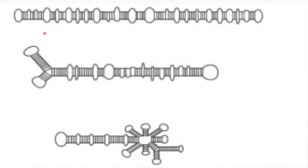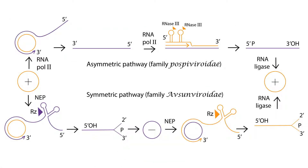Three types of viroid structures have been proposed. First is the rod-like secondary structure, proposed for Potato Spindle Tuber Viroid, the type member of the family Pospiviroidae. Next is the quasi rod-like secondary structure, proposed for Avocado Sunblotch Viroid, the type member of the family Avsunviroidae. Next is the complex branched conformation, proposed for Peach Latent Mosaic Viroid.